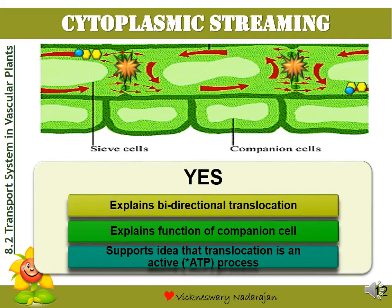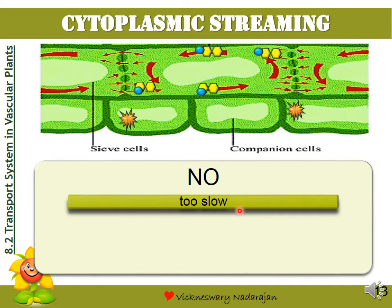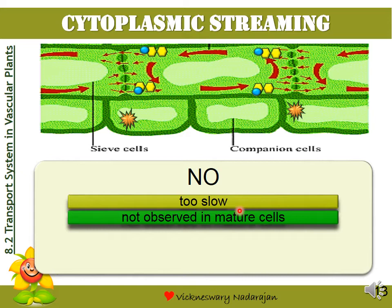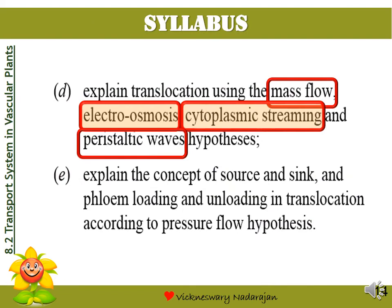However, let's look at the reasons why cytoplasmic streaming is not completely accepted by biologists. The problem with this hypothesis is that cytoplasmic streaming is a very slow process and will not be able to keep the plant alive. Secondly, in mature adult cells, we cannot visually see cytoplasmic streaming happening. Finally, translocation is found to occur even in older cells, although in older cells ATP production is reduced. So we come next to the third hypothesis: the peristaltic wave hypothesis.